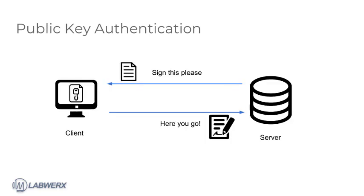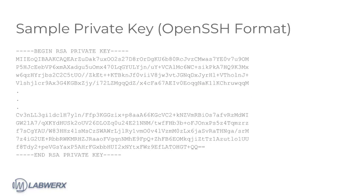Next up is public key authentication from a private key file. Under this authentication scheme, the server requires the client to prove its possession of the private key by requesting a unique signature. This signature is verified by the server by checking it against the corresponding public key, which the server already has.